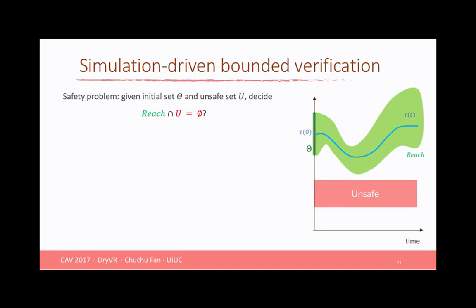So the major part of DRIVER is doing safety-bounded verification. The safety problem is defined as following: from the initial set theta and given unsafe region, we want to see whether the reach set of the system has intersection with unsafe. If they are disjoint, we call it safe. And if some trajectory goes into unsafe, we will see the system is unsafe with the trajectory as counterexample.